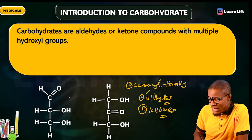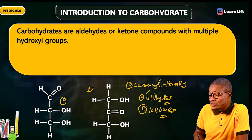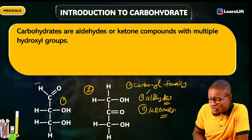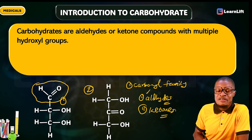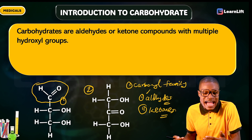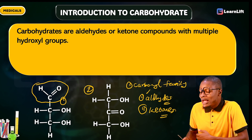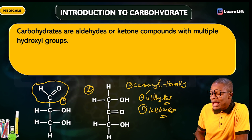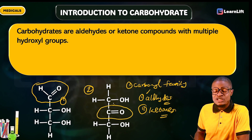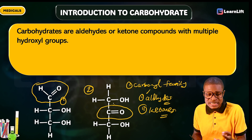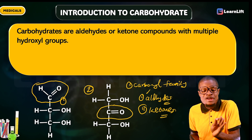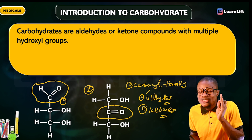Looking at these two structures — structure one and structure two — we can identify them. Structure one contains a carbonyl family group, and that is the aldehydes, also called alkanals. Structure two also contains a carbonyl group, and this one is your ketone or alkanone. So the carbonyl family contains either aldehydes or ketones.